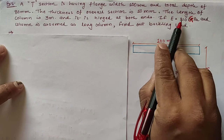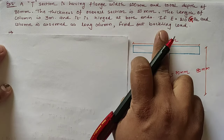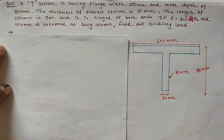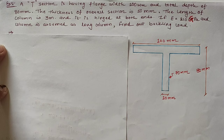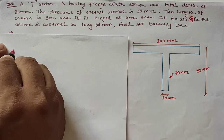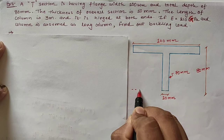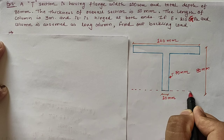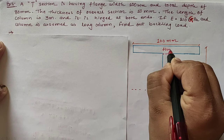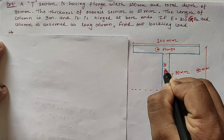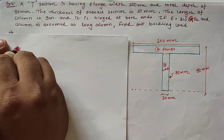The modulus of elasticity is 210 GPa, or 2.1×10⁵ N/mm². We need to calculate the buckling load. First, we calculate the moment of inertia with respect to the x-axis (Ixx) and y-axis (Iyy). To find Ixx, we first calculate the centroid distance from the extreme bottom of the web. The T-section is divided into two parts: the flange and the web.